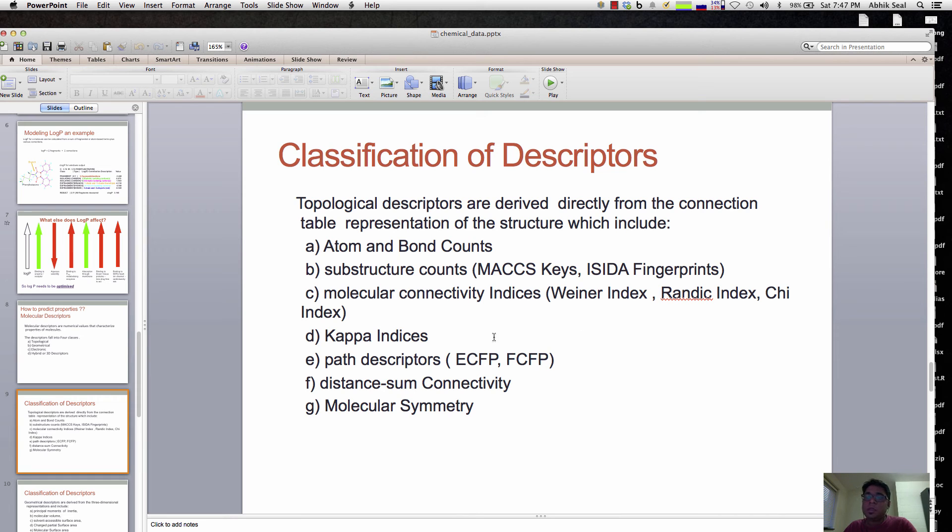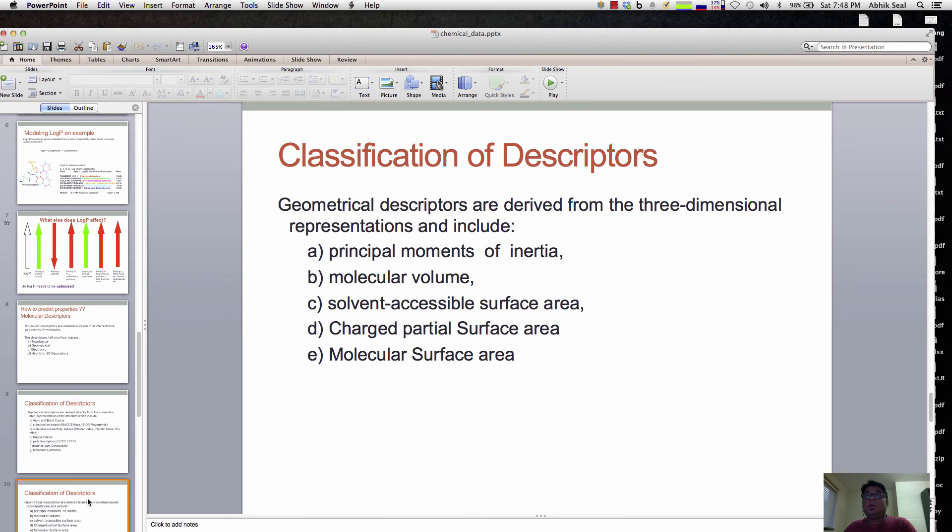There are also path-based descriptors, which are very popular like ECFP and FCFP, the circular fingerprints, and some topological descriptors like molecular symmetry, distance, and connectivity. These topological descriptors calculate the topology of the molecule, and you can correlate it to make a predictive model based on log P and see whether topological descriptors are capable enough to predict log P.